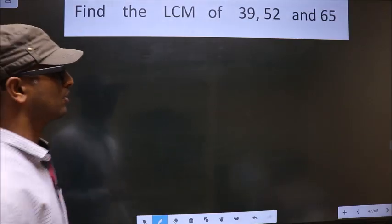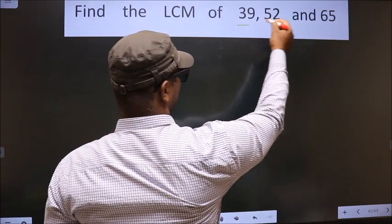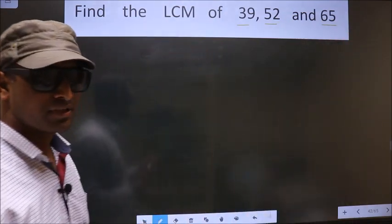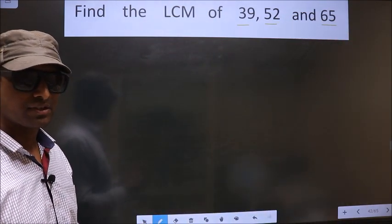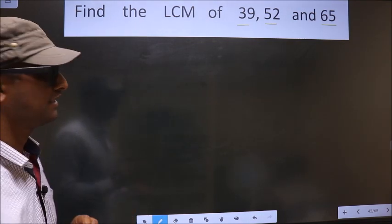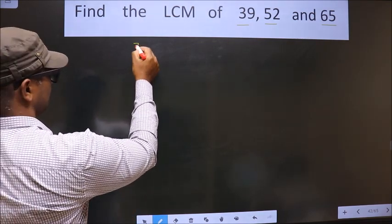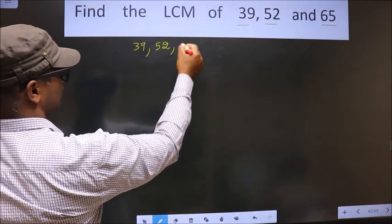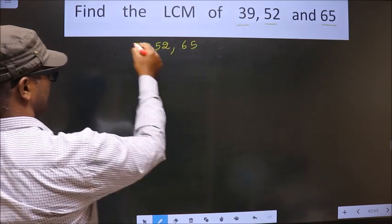Find the LCM of 39, 52 and 65. To find the LCM, first we should frame it in this way. See, that is 39, 52 and 65.